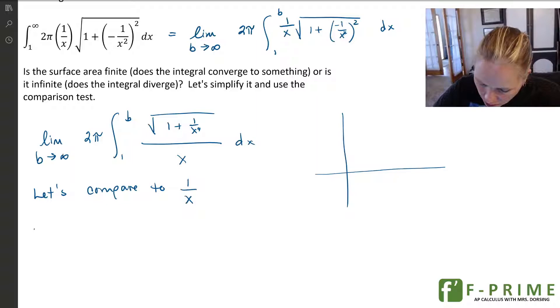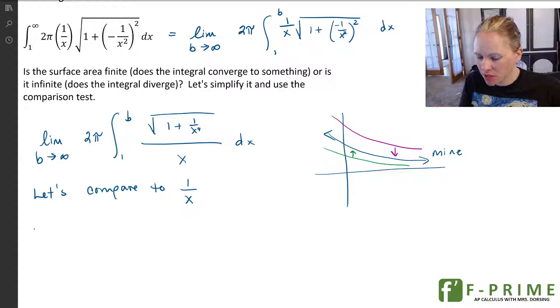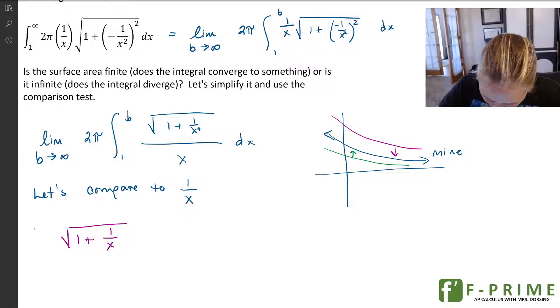Now, when we do the comparison test, remember, the whole idea here is that if I have my function that is kind of going like this, right? So this is mine. I either want to pick one that is below it that will diverge, or I want to pick one above it that will converge. Because the idea is if I can pick a function either above or below that will always remain above or below, then I can show either convergence or divergence. But I have to be really careful about this. So what I want to do is I'm going to compare it to 1 over x. And here's why.